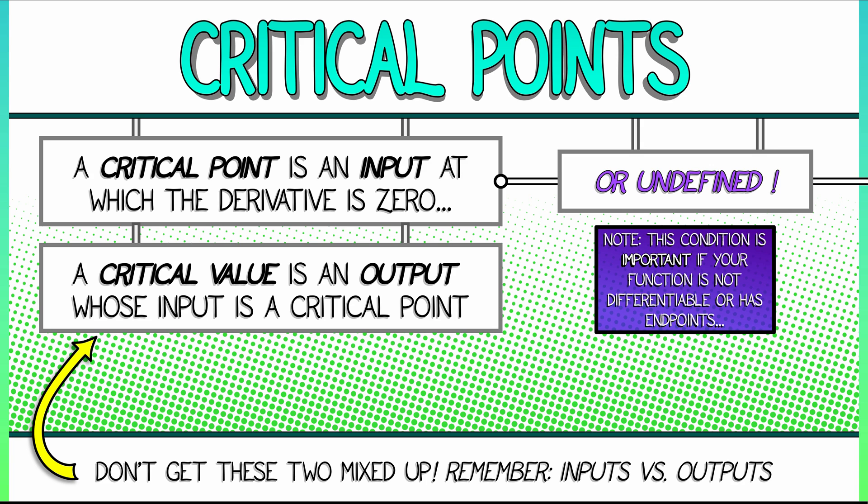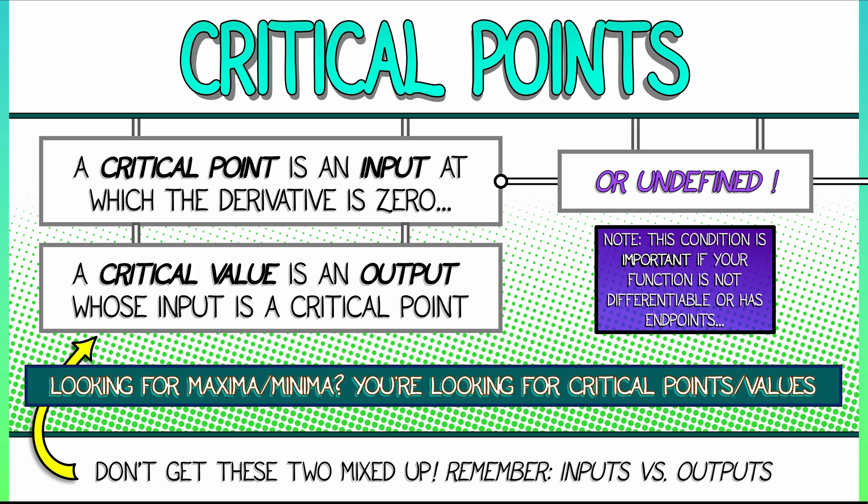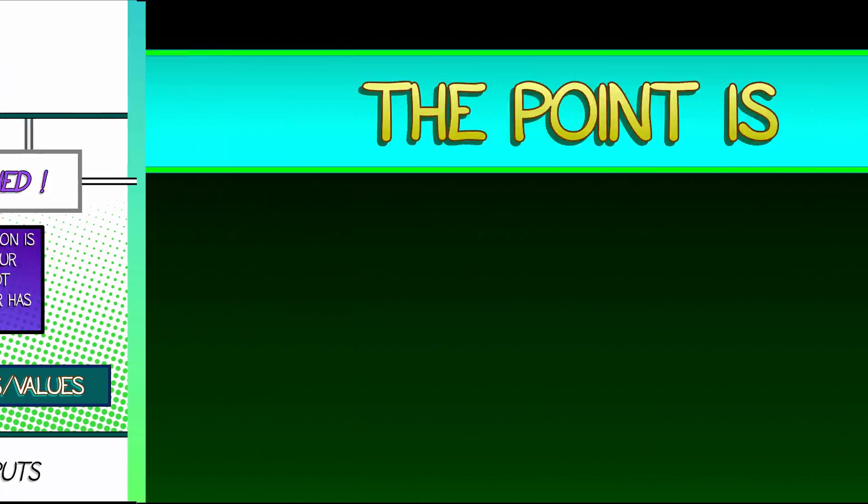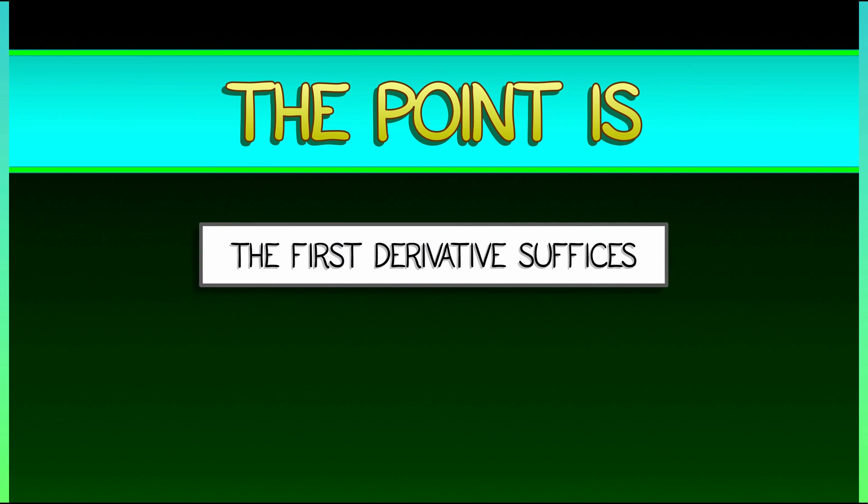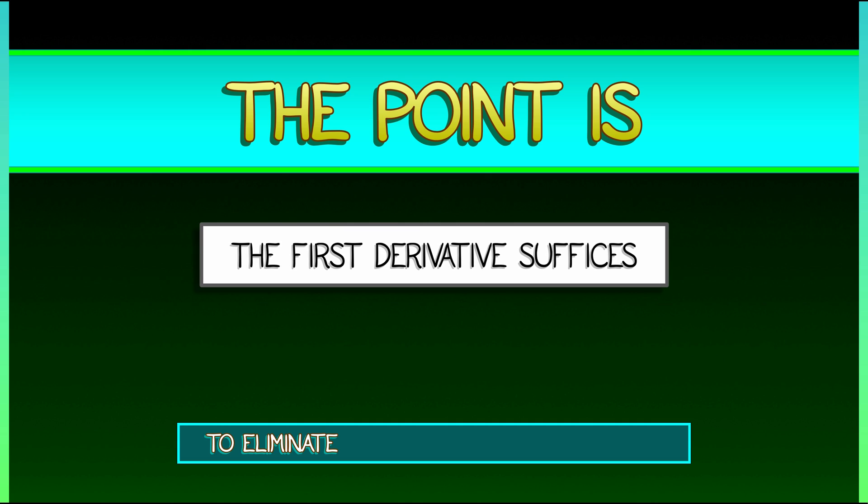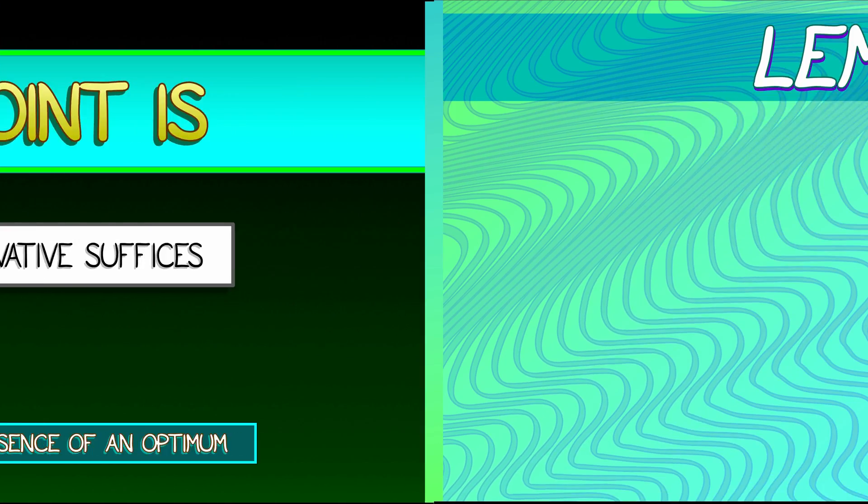Because if you're looking for a max, if you're looking for a min, you're really looking for critical points. Why? Well, the point is that the first derivative suffices to eliminate the presence of optima. This is the motivation for the definition of a critical point in terms of the derivative being zero. Why? The following lemma.